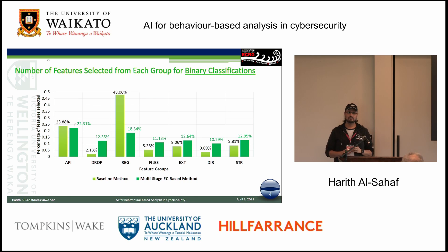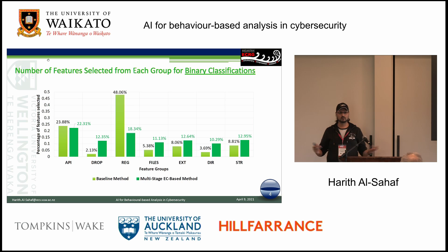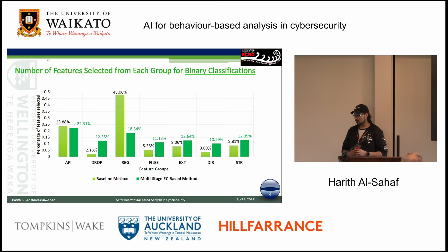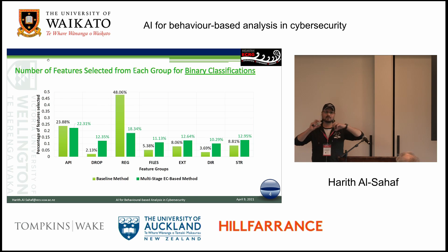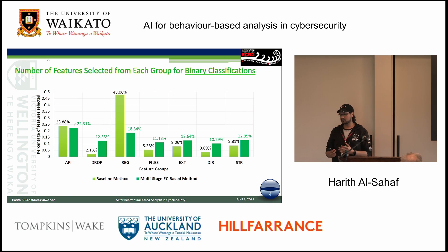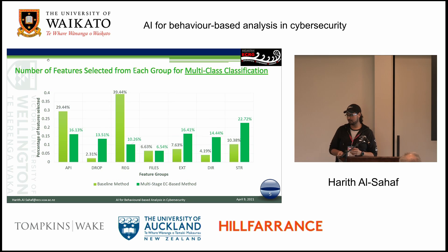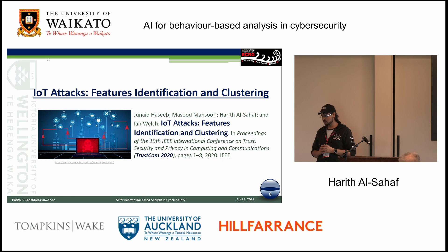We utilized Particle Swarm Optimization, a global searcher, because the search space was really huge — around 32,000 features — and the number of samples we had was really small, less than 2,000, including both goodware and ransomware. PSO was optimizing the number of features to select from seven different groups. After analysis, we found that PSO gave us even better solutions compared to a human domain expert, for both binary and multi-class classification. It was very promising.